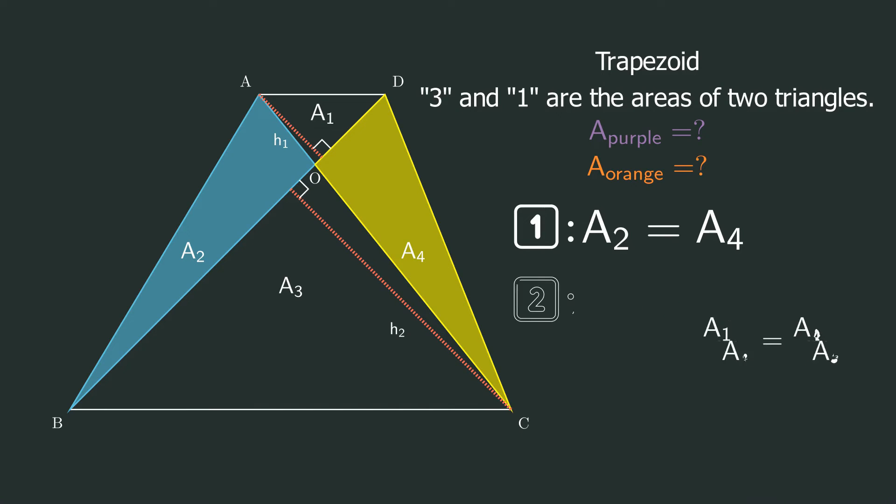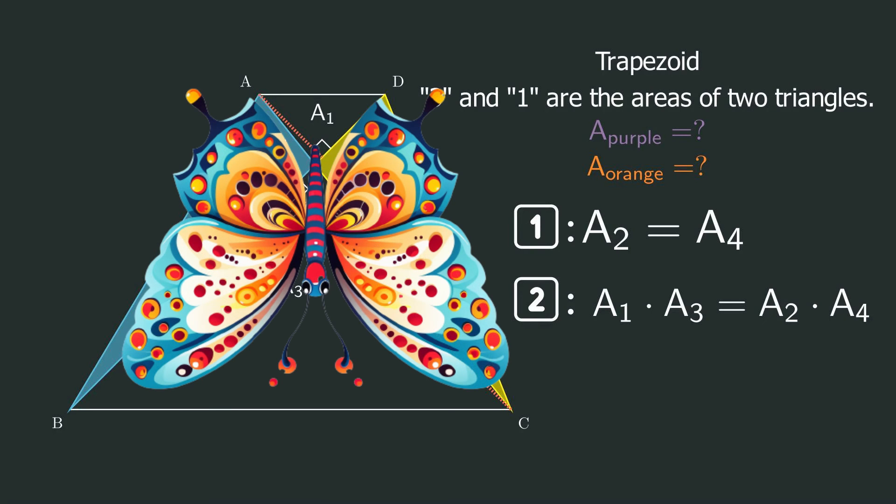When multiplying the diagonals, we can draw the second conclusion: in the trapezoid, connect the diagonals. The product of the areas of the two triangles above and below is equal to the product of the areas of the two triangles on the left and right. For ease of memory, some countries have given it a nickname: the butterfly model, as it really does resemble a butterfly.